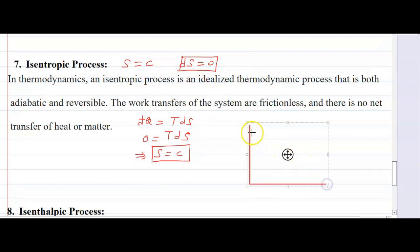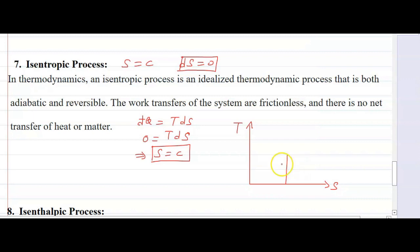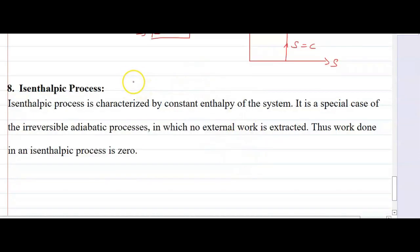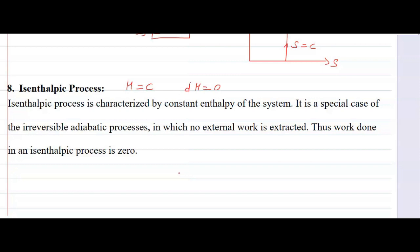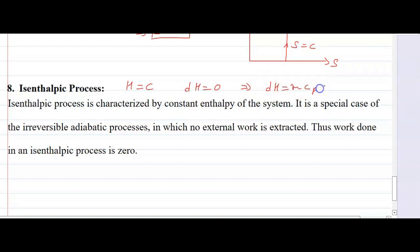On a temperature-entropy (TS) diagram, a constant entropy process appears as a vertical straight line. The isenthalpic process is one in which enthalpy is constant. It is a special case of the irreversible adiabatic process in which no external work is done. We know that dH = mCp dT, and in an isenthalpic process the change in enthalpy is zero.